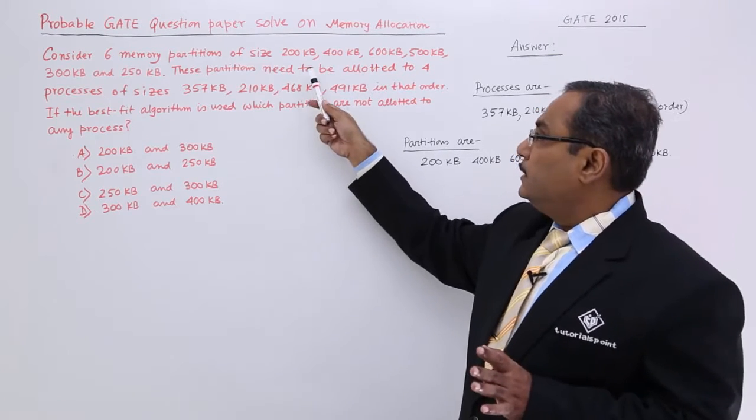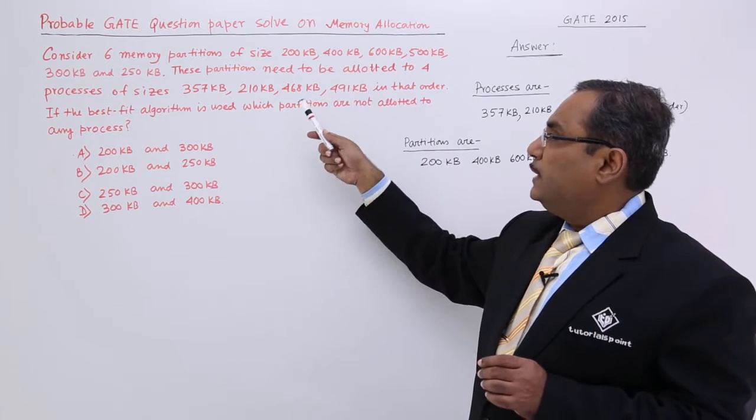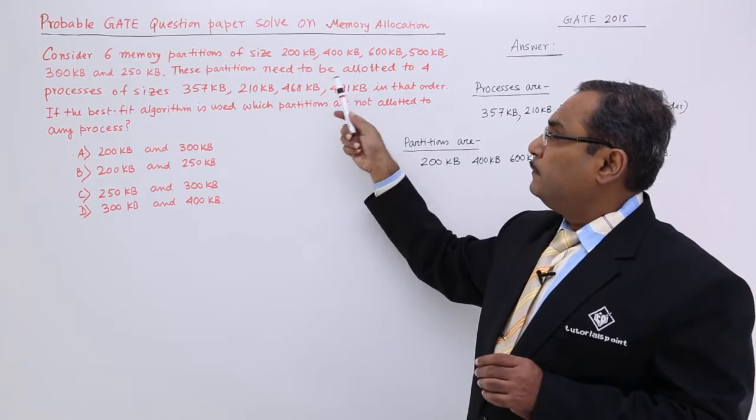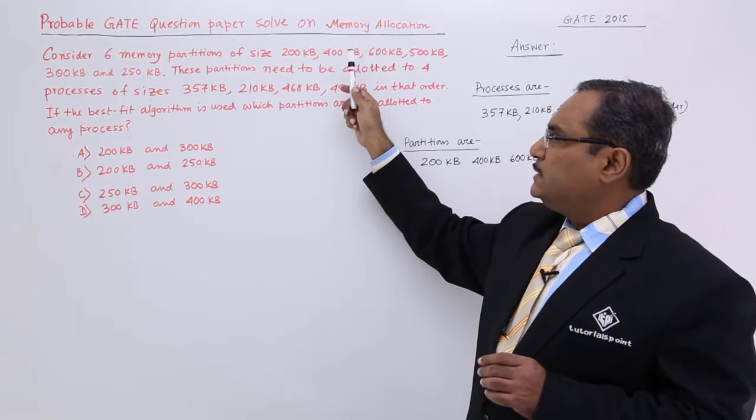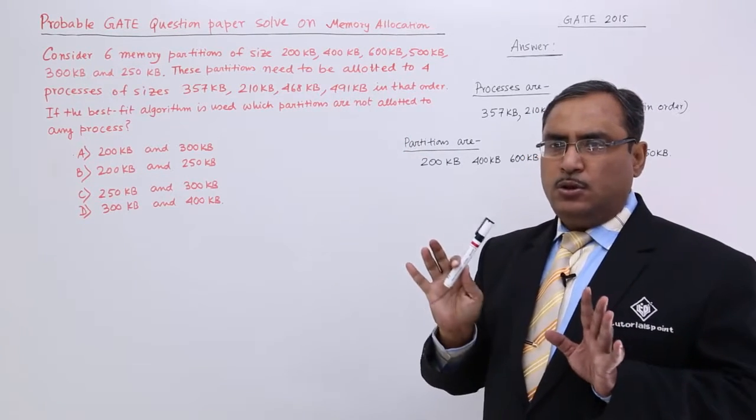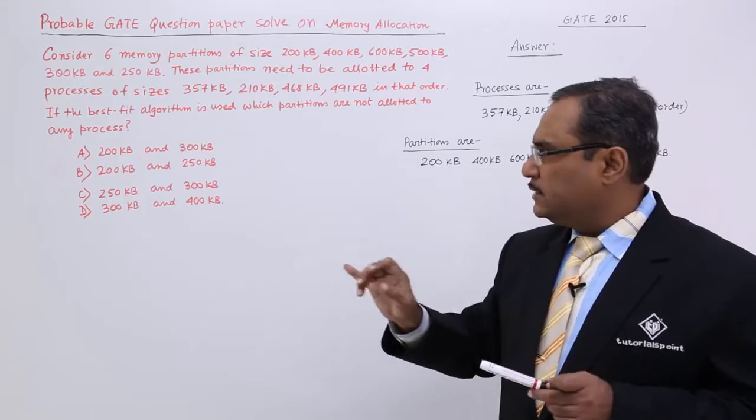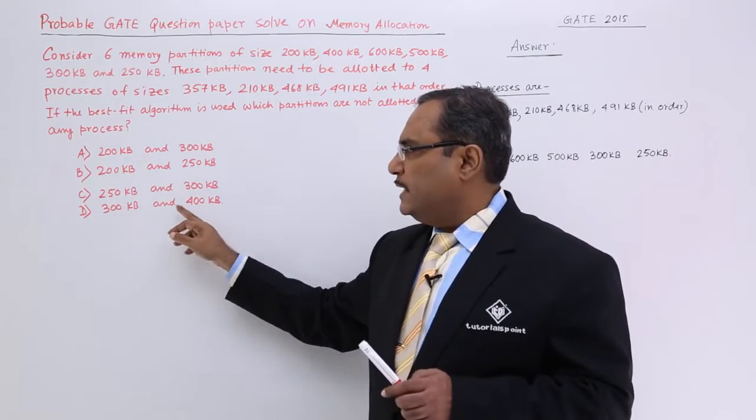They are asking that we are having 6 partitions and we are having 4 processes. Processes number is 4, partition number is 6. So at least 2 partitions will remain unallocated. That is why they are giving some answers.